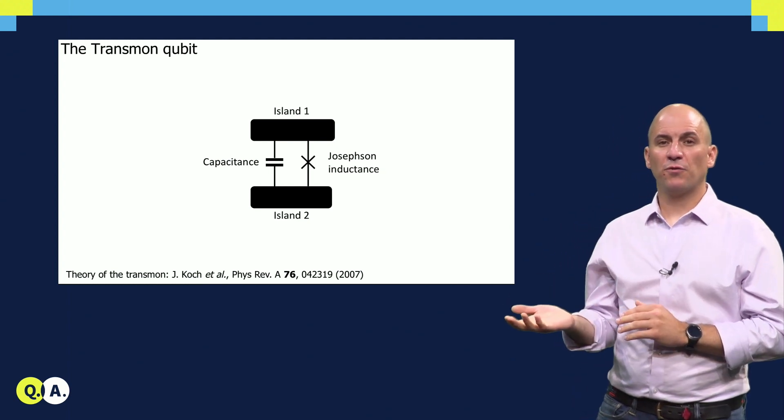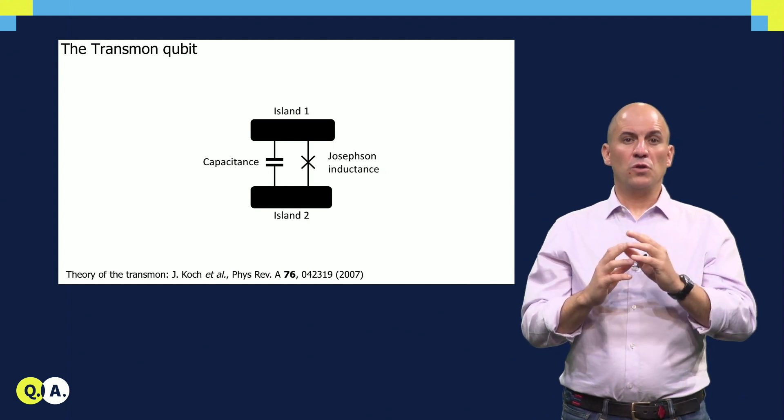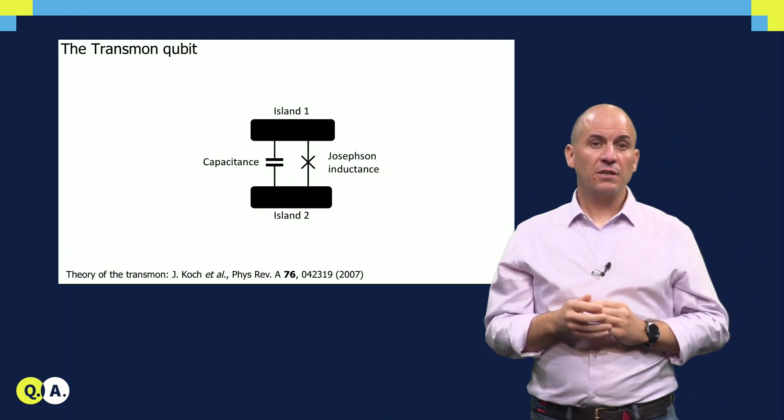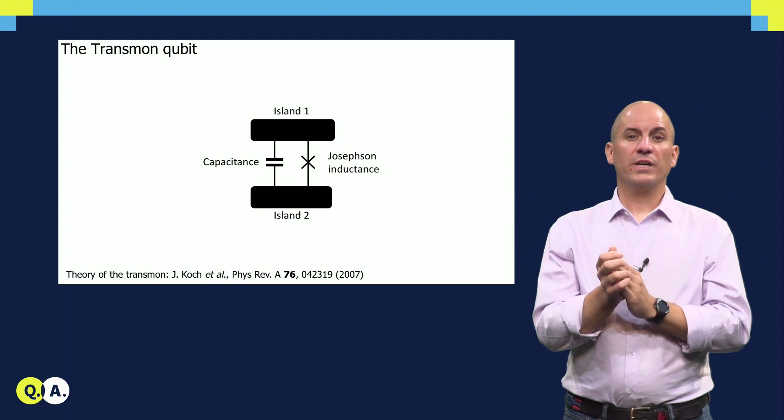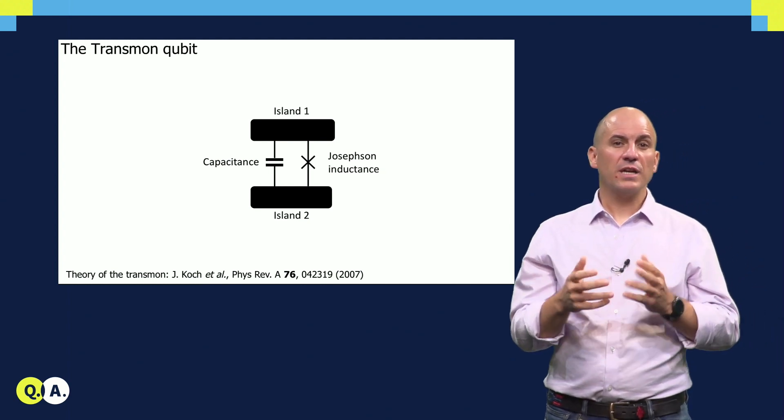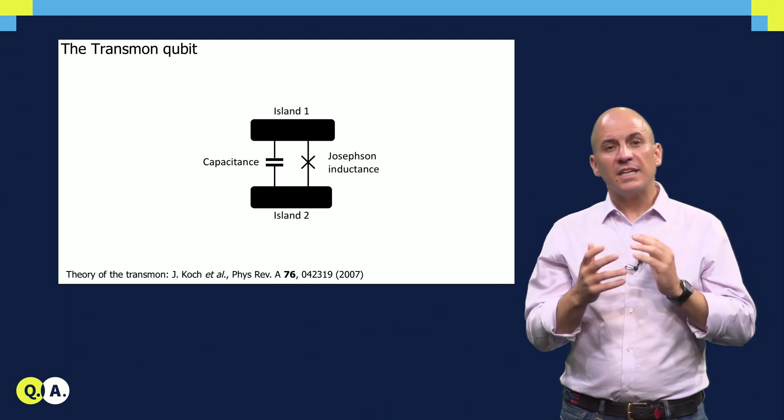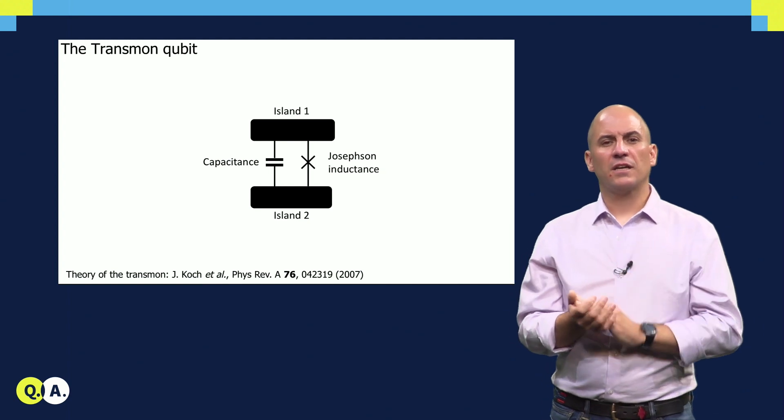In its simplest form, the transmon consists of two islands interconnected by one junction. Those of you familiar with circuits, particularly the electrical engineers, will recognize that the transmon looks just like a parallel combination of one capacitor and one inductor. In other words, an LC oscillator. This gets us most of the way there, so let's take a look.